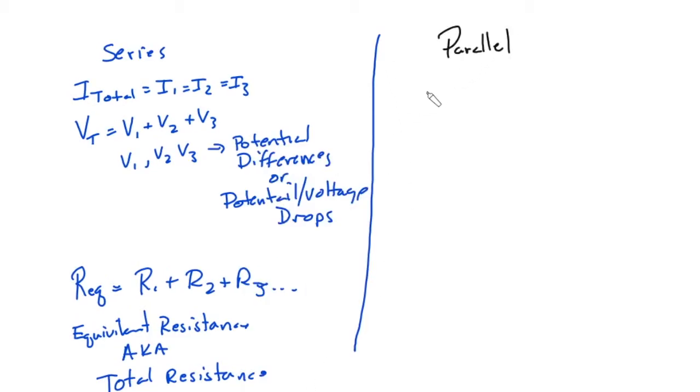But now if we look at parallel here, V total is equal everywhere, and I total is going to be the sum. All right, those are the pretty basic flips, so these two kind of flip, one for the equal one.